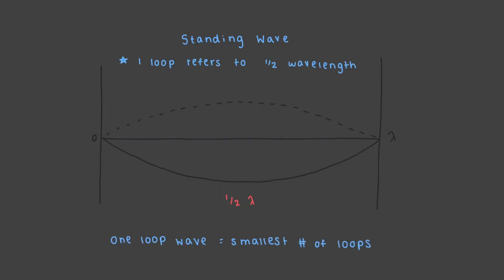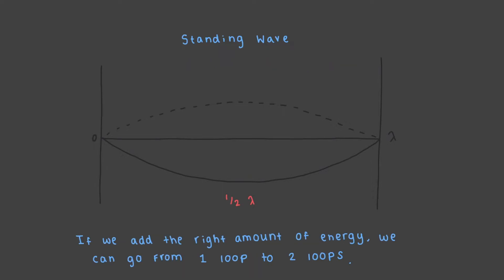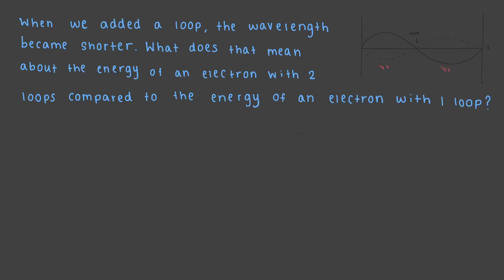This is the smallest number of loops an electron wave can have — if there were no loops, there wouldn't be a wave. Adding the right amount of energy will transform our lowest energy wave, one loop, into a wave with two loops. When we add a loop, the wavelength becomes shorter. What does that mean about the energy of an electron with two loops compared to one loop?